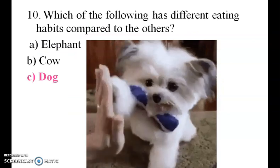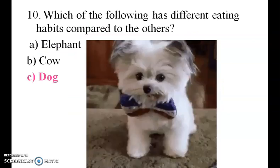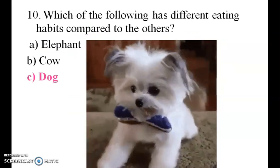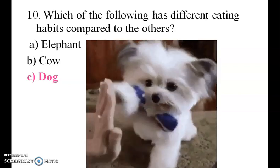Which of the following has a different eating habit compared to the others: elephant, cow, or dog? The answer is dog, as it is a carnivore while the others are herbivores.